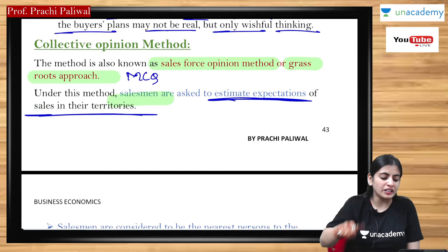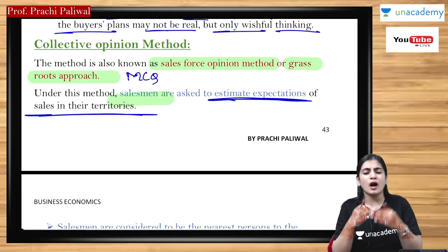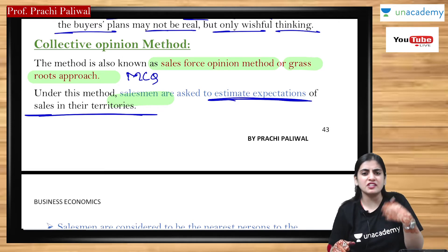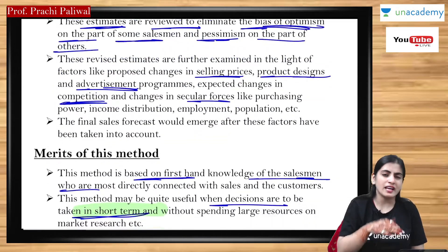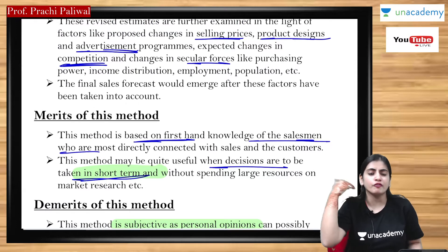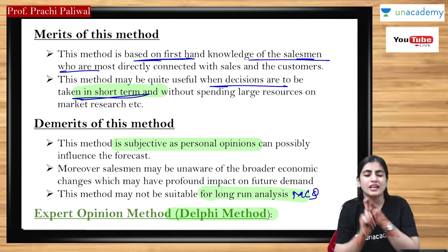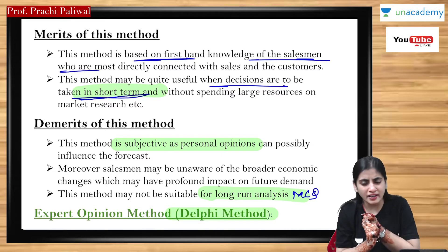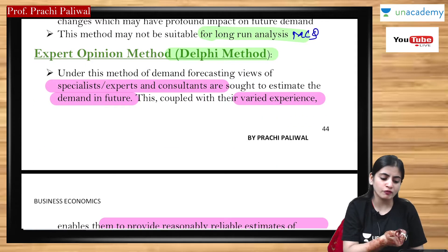The next method is collective opinion method, also known as sales force opinion method or grassroots opinion method. Here you ask the salesman for the estimation of future demand. The salesman is the nearest person to the wholesaler, retailer, and consumer, so he can give the correct estimation of future demand. This method is also used for short-term analysis and is not suitable for long-run analysis.